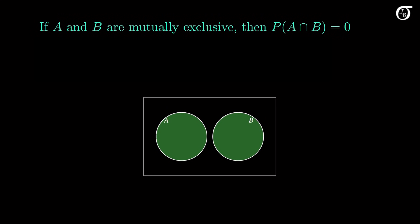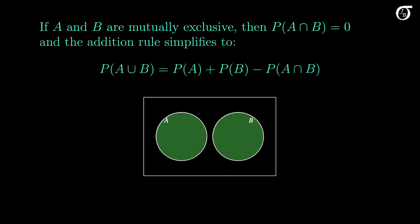Recall that if A and B are mutually exclusive, they don't share any sample points and the probability of their intersection is 0. So if A and B are mutually exclusive events, the addition rule simplifies so that the probability of the union equals the sum of the individual probabilities. This is sometimes referred to as the special addition rule.